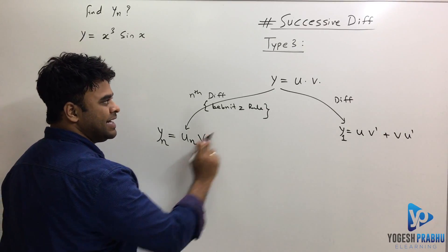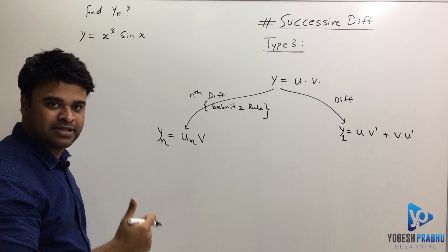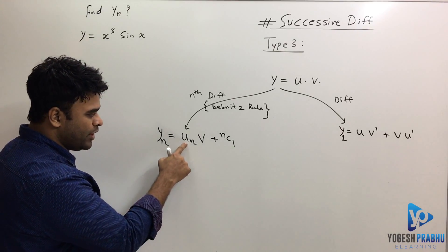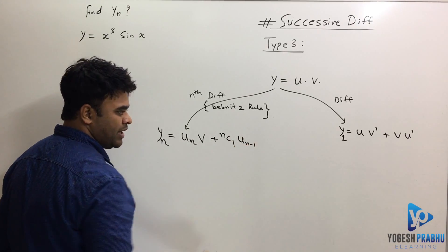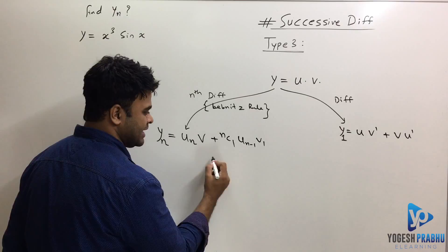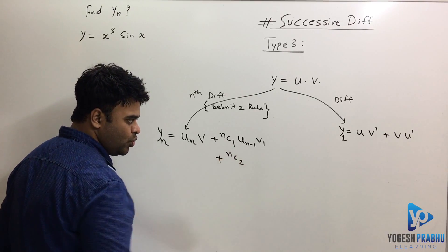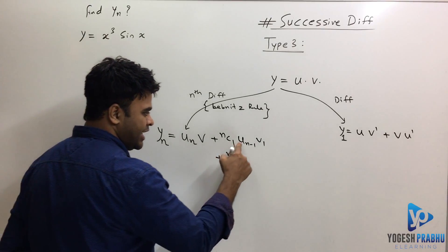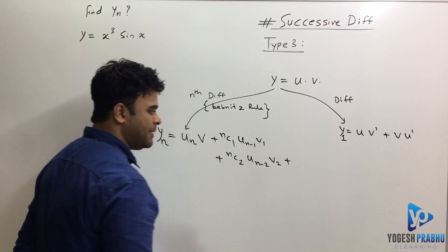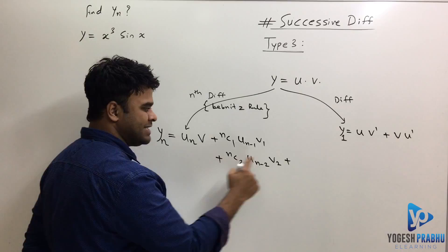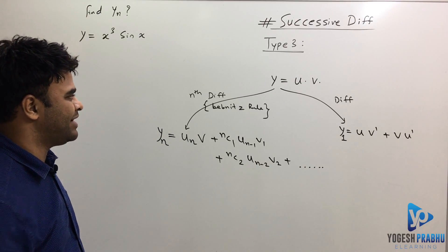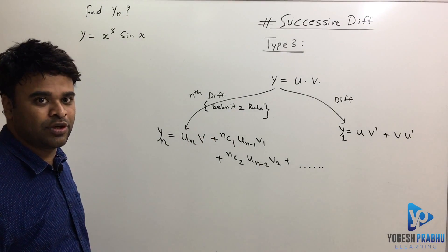The first term of y_n is u_n·v. The next term is nC1·u_{n-1}·v₁, and so on. The next term is nC2·u_{n-2}·v₂, then nC3·u_{n-3}·v₃, and so on. That's how we write the nth differentiation when we have a product of two terms.